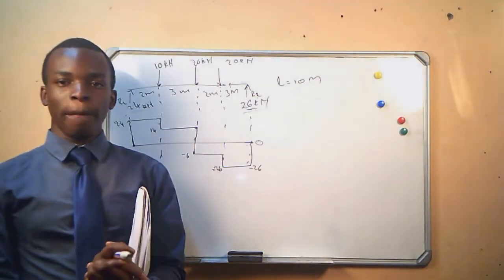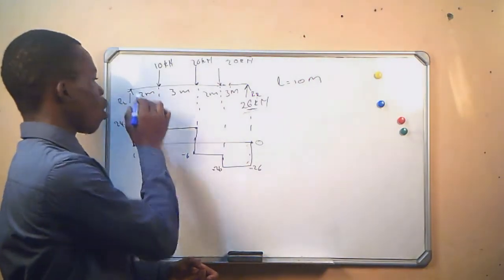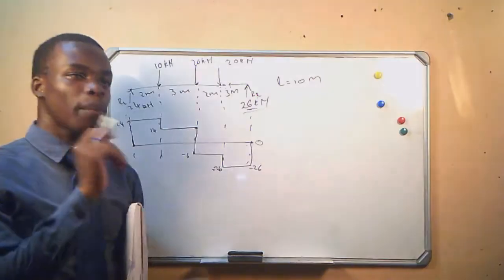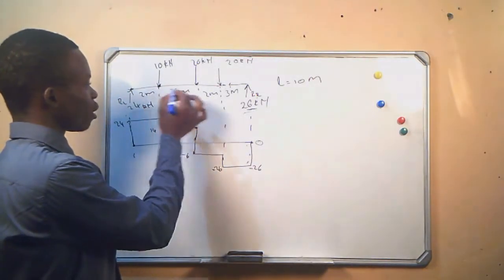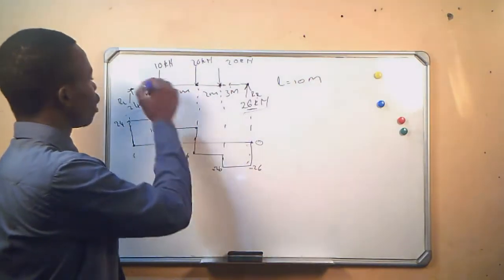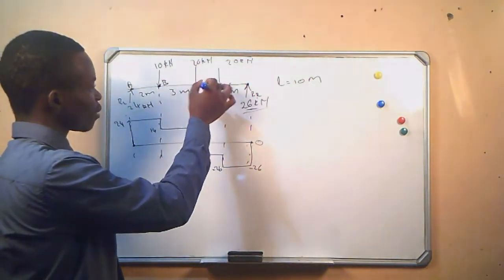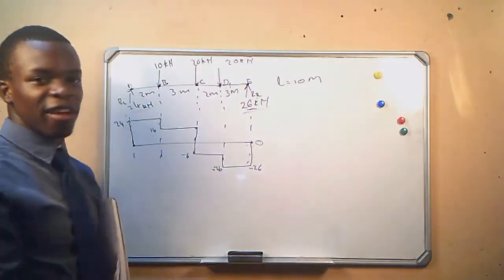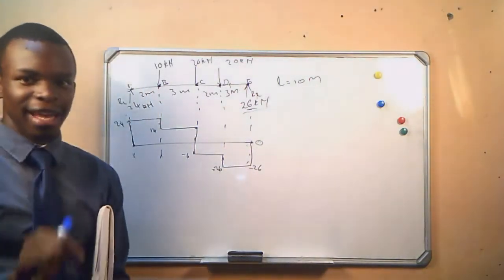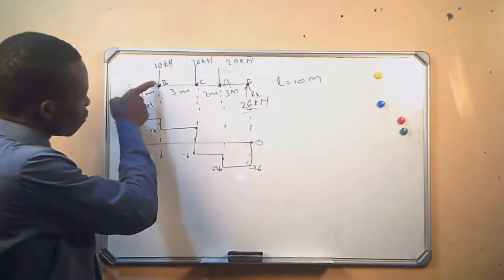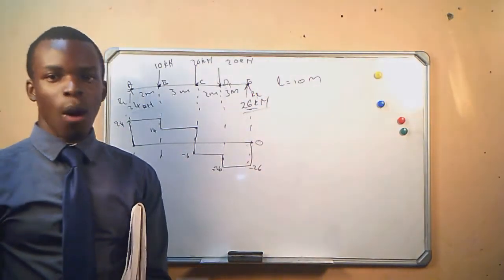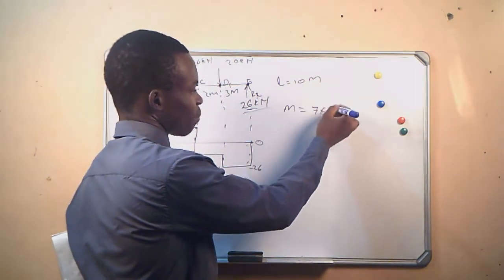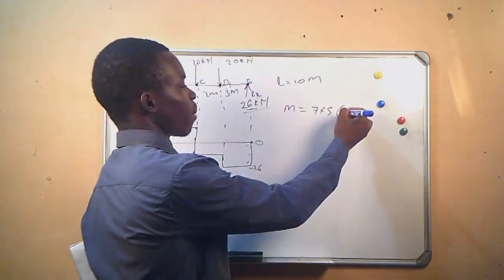The next step is to draw the bending moment diagram. To do that, we first have to calculate the values at each and every point of importance on our beam — that is, the points where a force is acting. We name them A, B, C, D, and E. We have to get the value of the bending moment at each of those points. We know that a moment is the product of force times distance and its unit is kilonewtons times meters.